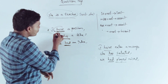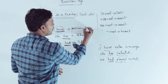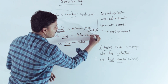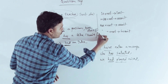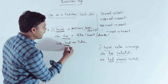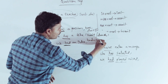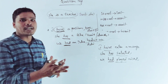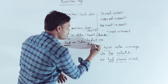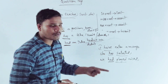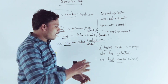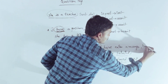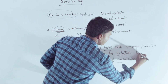Have-forms versus do-forms: 'Haven't I?' — don't say 'don't I.' 'Hasn't she?' — don't say 'doesn't she.' When the sentence uses a have-form as a helping verb, use the have-form in the question tag: haven't I, hasn't she, hadn't we.